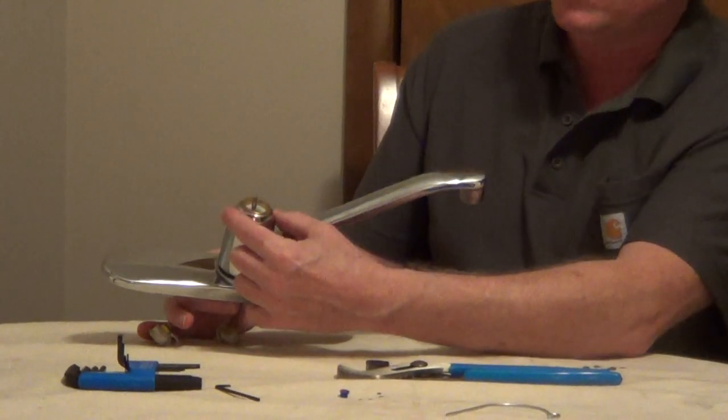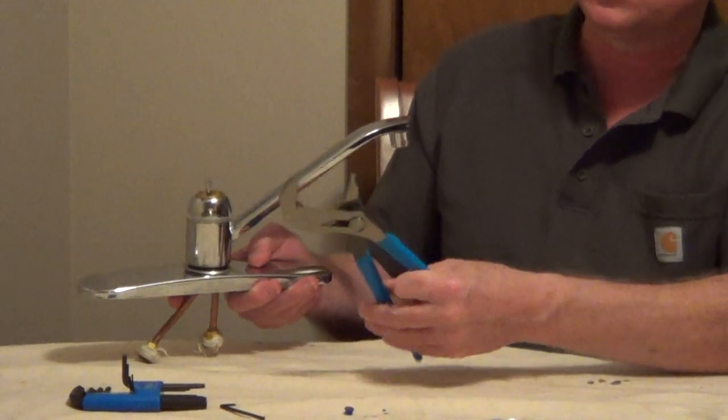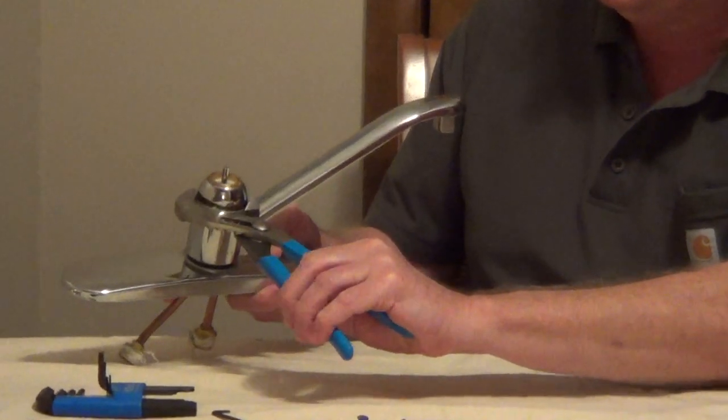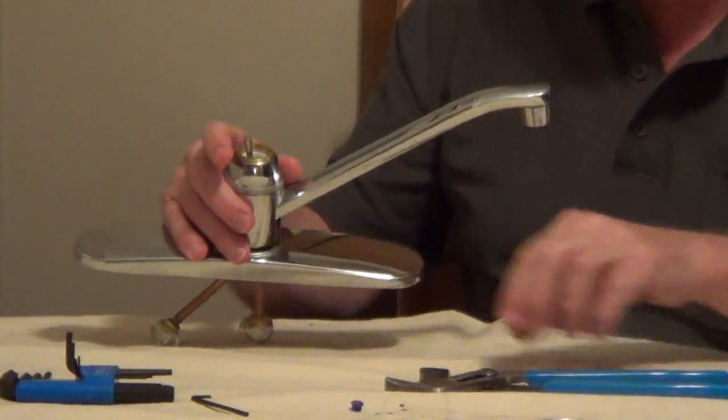What we have is a retaining cap that holds the ball in place. All we're going to use is a channel lock. It has a serrated body here to grab onto, and you can also put a piece of cloth over this.